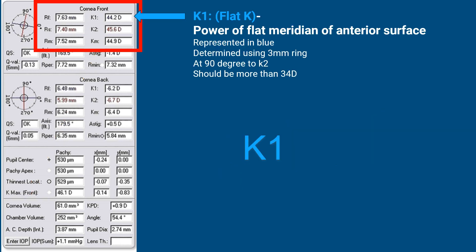K1 is the flat K — it's the power of the flat meridian of the anterior surface. It is presented in blue and is determined using the central 3 mm ring. The mnemonic here is that K1 is the flat K.